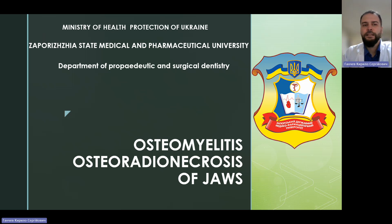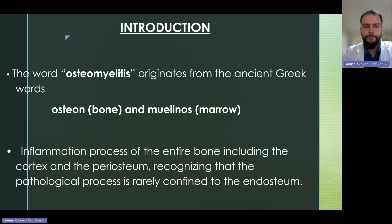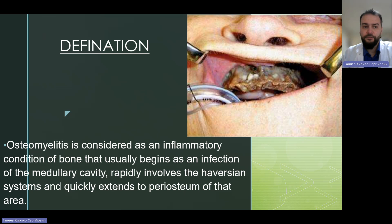Greetings students. Today our lecture is dedicated to osteomyelitis and osteoradionecrosis of the jaws. It's a very important subject in our field. As introduction, the word osteomyelitis originates from ancient Greek words: osteon meaning bone and myelinos meaning marrow. It is an inflammation process of the entire bone, including the cortex and the periosteum, recognizing that the pathological process is rarely confined to the endosteum. As a definition, osteomyelitis is considered an inflammatory condition of bone that usually begins as an infection of the medullary cavity, rapidly involves the Haversian system, and quickly extends to the periosteum of that area.